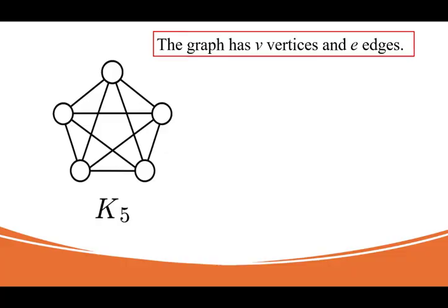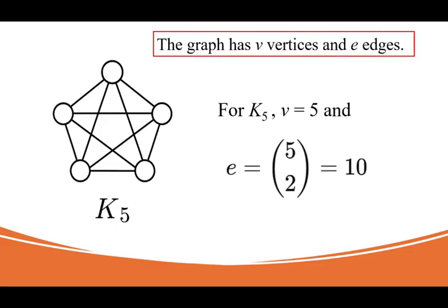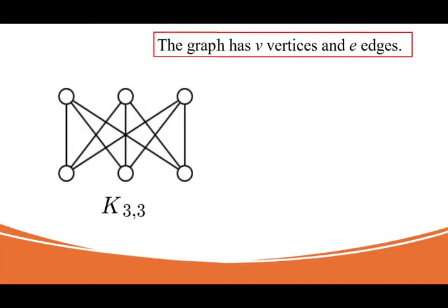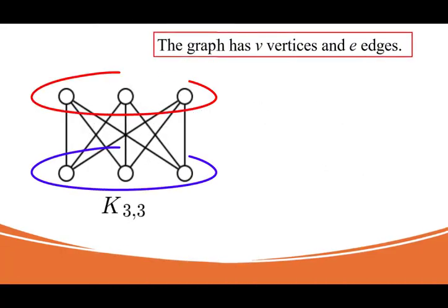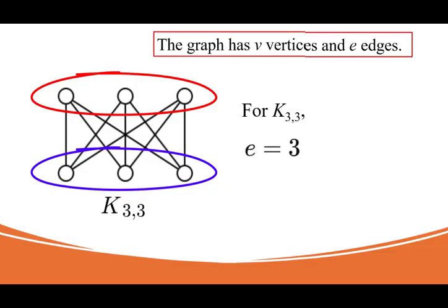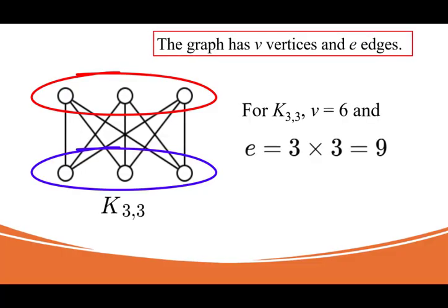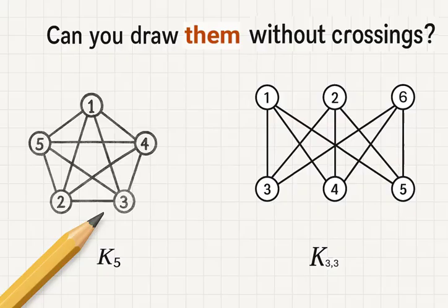K5 is the complete graph with five vertices. Every vertex is connected to every other vertex. That means the number of edges is 5 choose 2, which is 10. K33 is the complete bipartite graph with two sets of three vertices. Each vertex from one set is connected to every vertex in the other set. So it has six vertices and nine edges. Can these graphs be drawn without edge crossings? Let's find out.